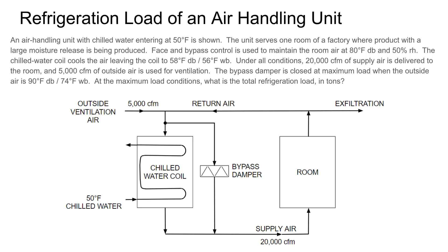Let's talk about why this bypass arrangement would ever be used in the first place. Why not put the entire 20,000 CFM over the coil? The reason is dehumidification. They told us the product being made in the factory has a large moisture release, so there must be something about this setup that allows us to control moisture. If you put the full volume over the coil and cool it to 58 degrees, that may only be a few degrees lower than the dew point temperature of the entering air, so the amount of moisture removal is limited.